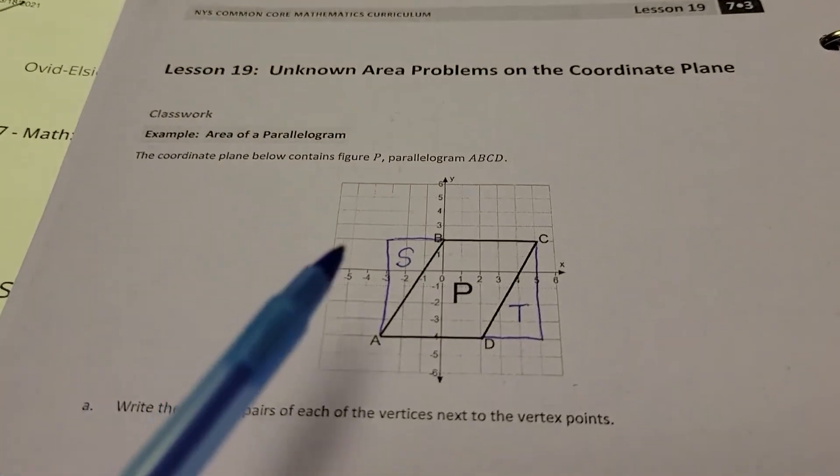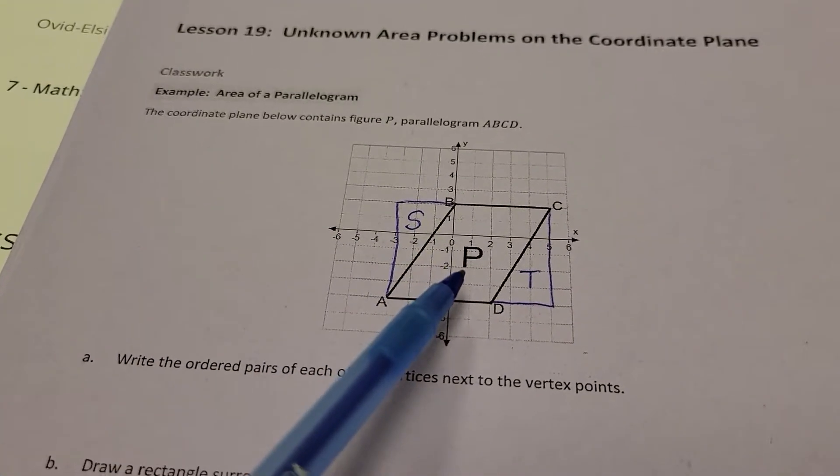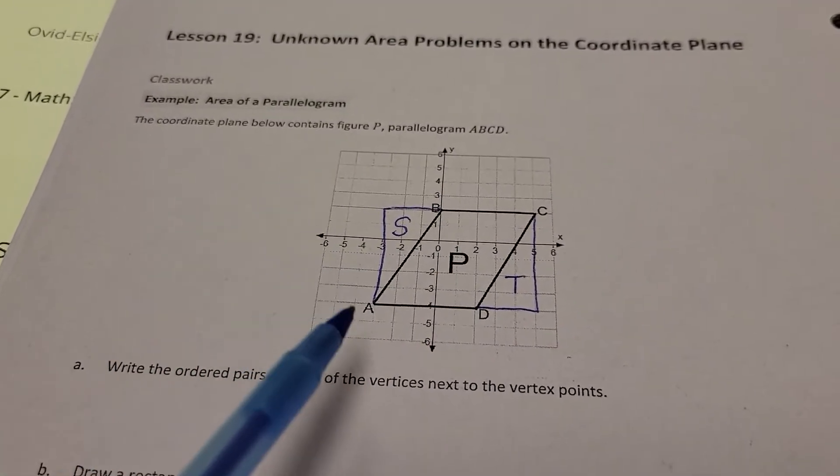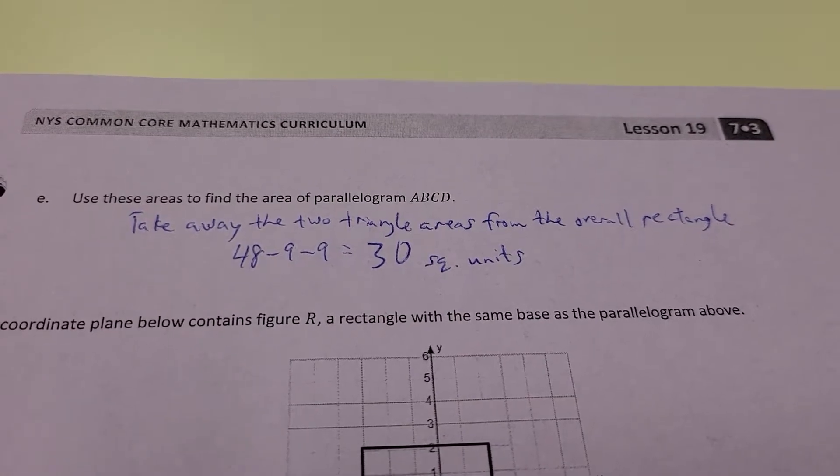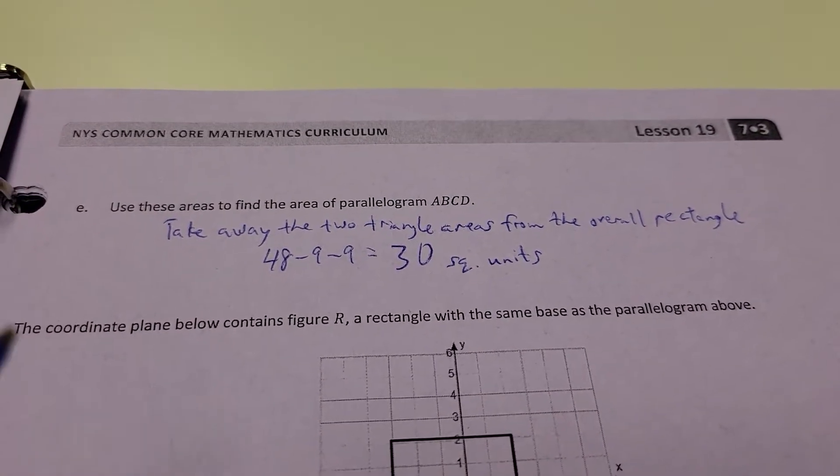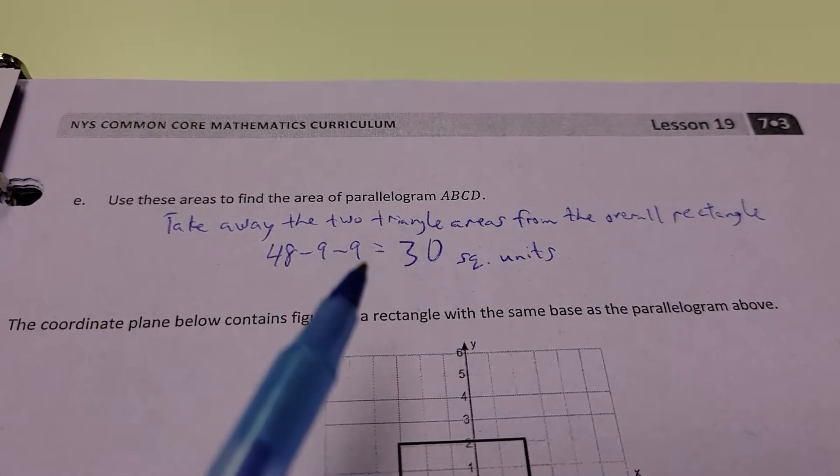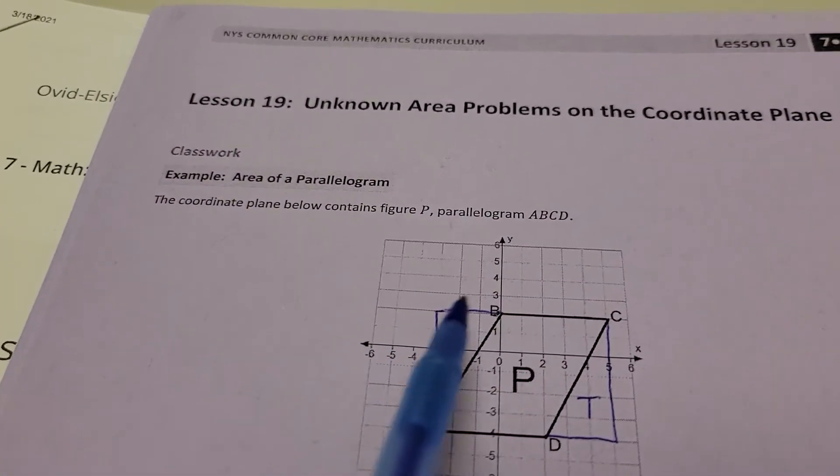Now, since I'm trying to find, ideally, the overall area of this, we straightened it all out, added a couple of little triangles on there, and what we're going to do is we are going to take away those two triangle areas from the overall rectangle now. So we're going to take 48, minus 9, and minus 9 to get 30. And why did I do that?